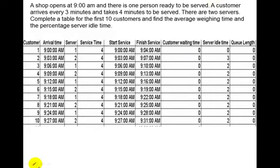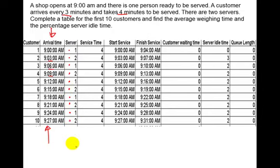The shop opens at 9 and we have one person ready to be served. A customer arrives every 3 minutes, the arrival time is 3 minutes, and it takes 4 minutes to be served. There are 2 servers and we are looking at the first 10 customers. Arrival times go 9:00, 9:03, 9:06, 9:09, all the way down to 9:27 — adding 3 minutes each time. In the server column I've got server 1 and server 2 rotating. Service time is a flat 4 minutes all the way down.